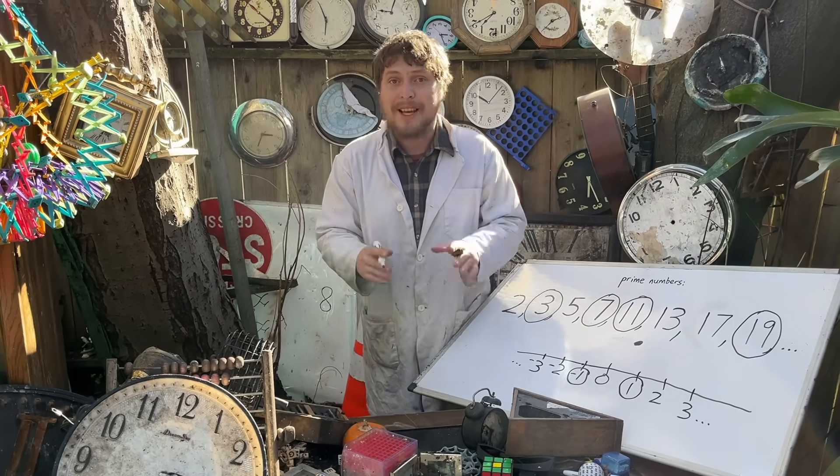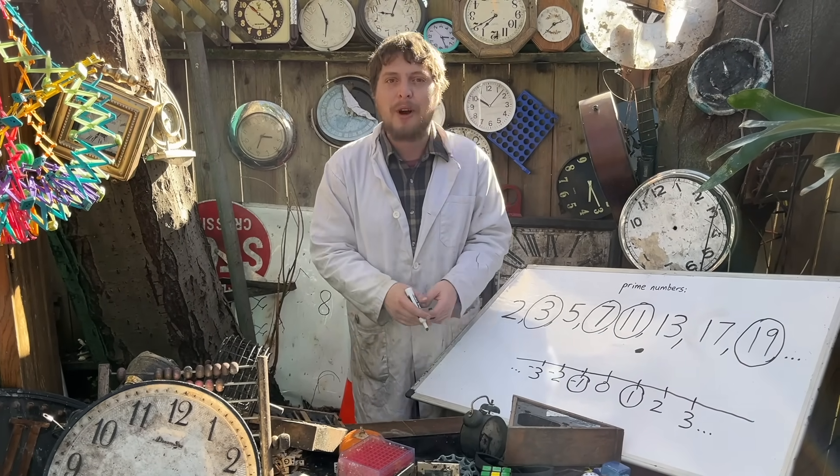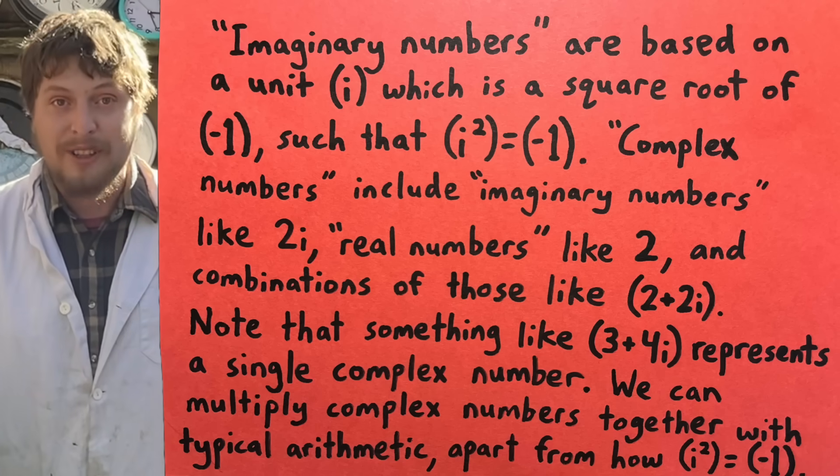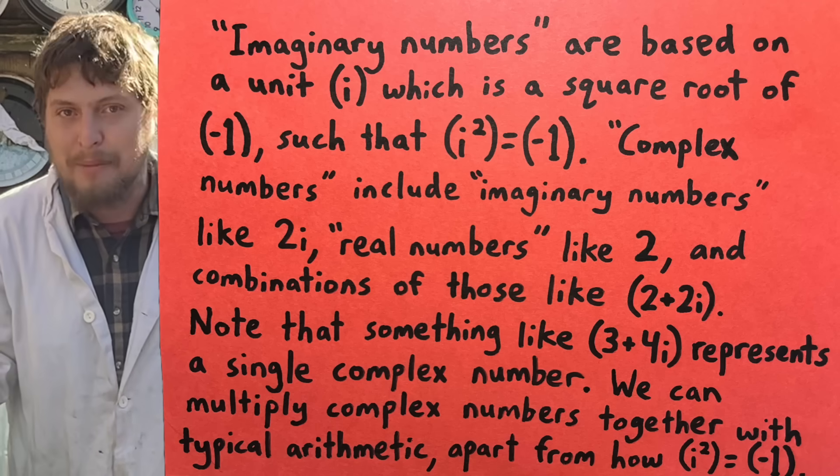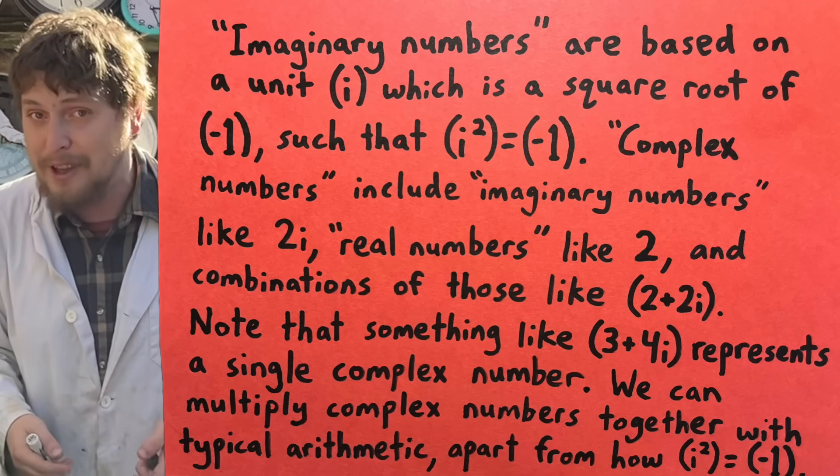Now there is a type of number that nicely fits this two dimensional layout, which are the complex numbers, which involve the real numbers, as well as the imaginary numbers, and numbers that are combinations of those.